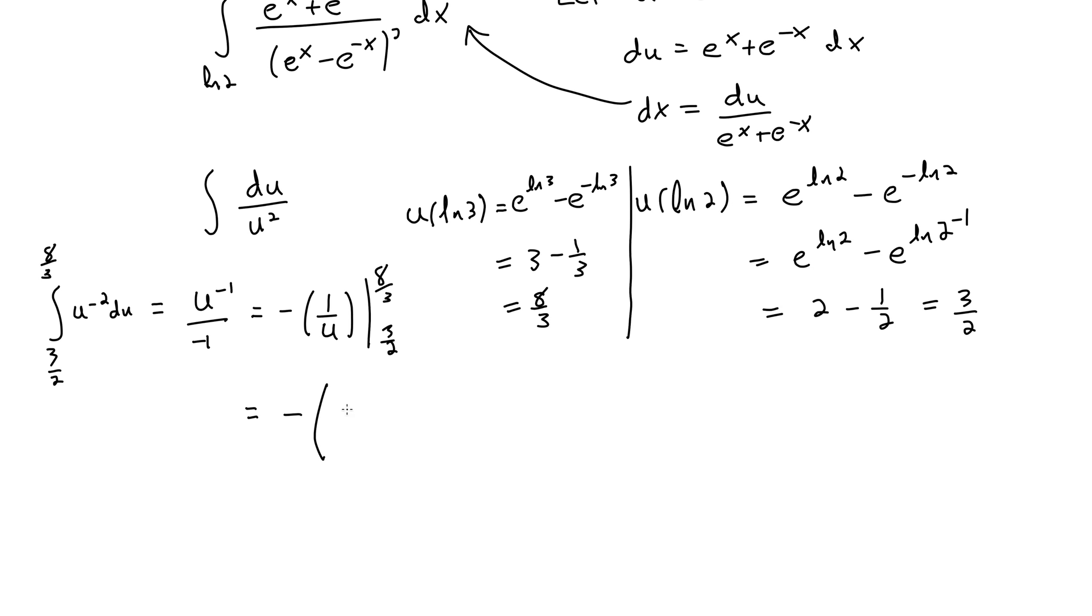I'm just going to leave that negative out front. 1 over 8 thirds is 3 eighths minus 1 over 3 halves is 2 thirds.